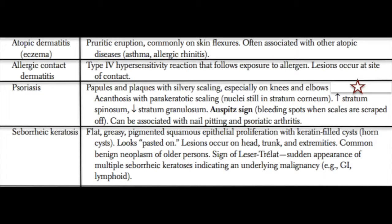In addition to acanthosis, psoriasis shows parakeratotic scaling and an increase in the stratum spinosum layer with a decrease in the stratum granulosum layer. Clinically, if you try to scrape one of these lesions, you'll get some bleeding — this is called a positive Auspitz sign, and is very characteristic of psoriasis.